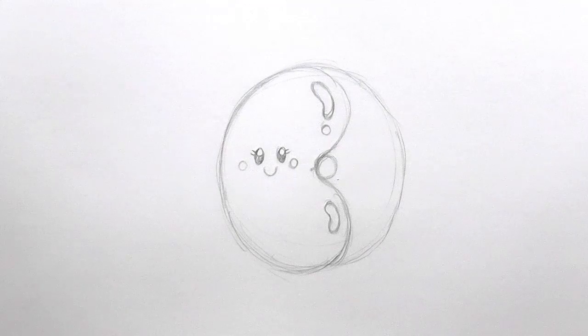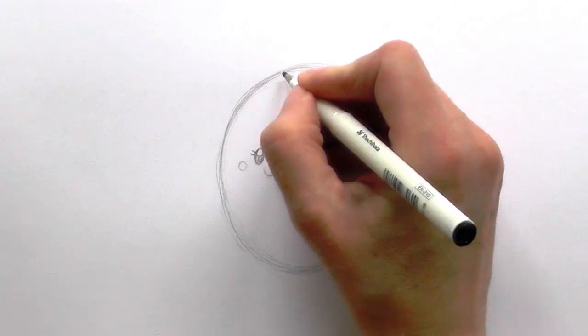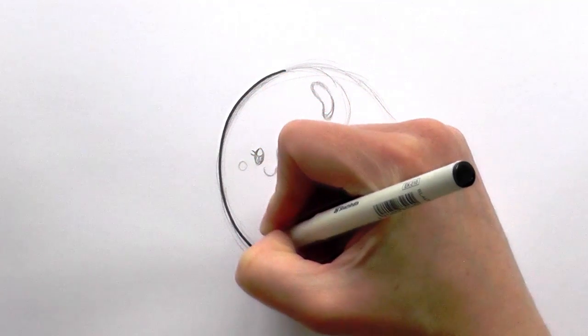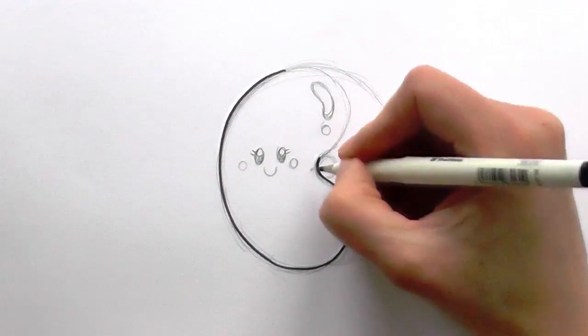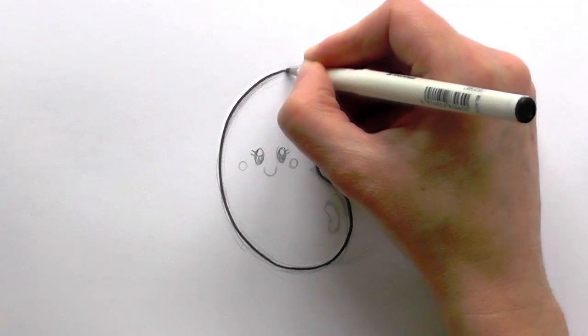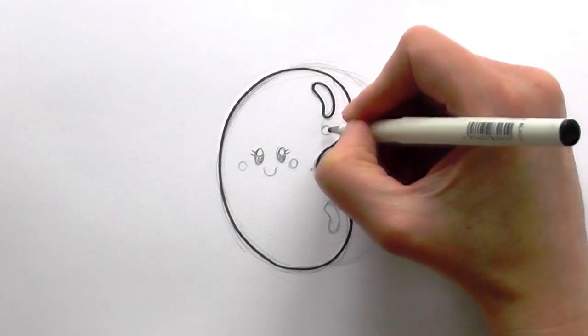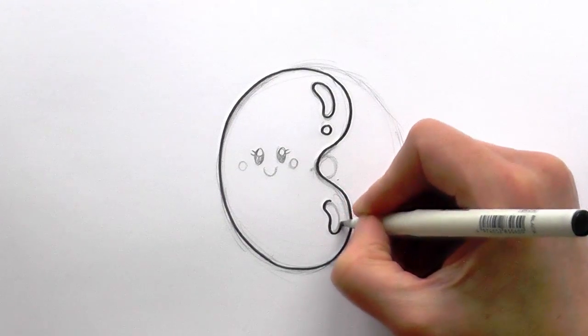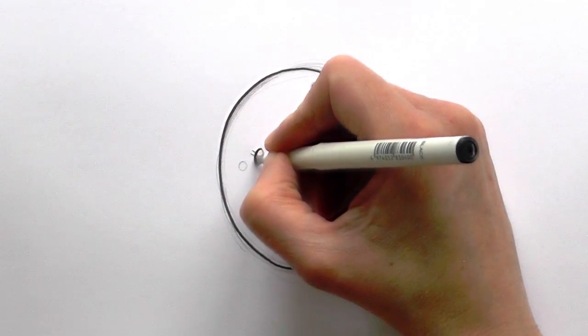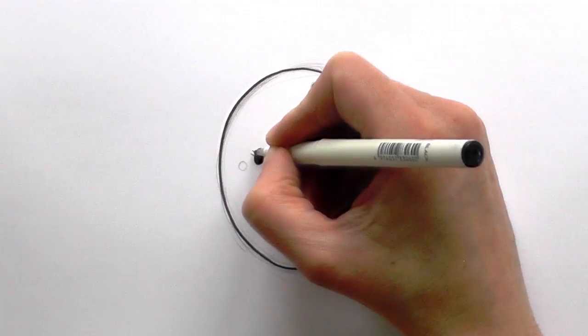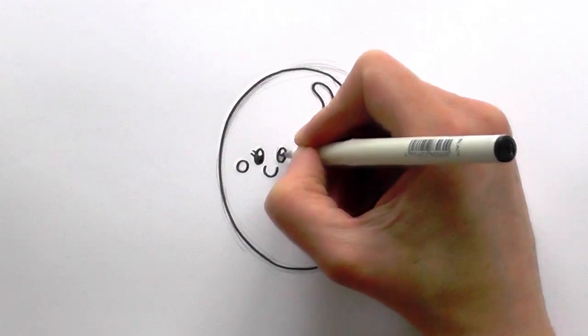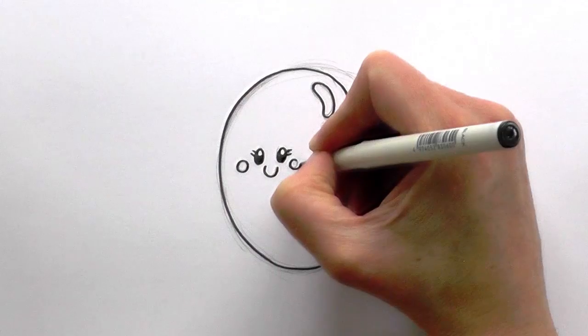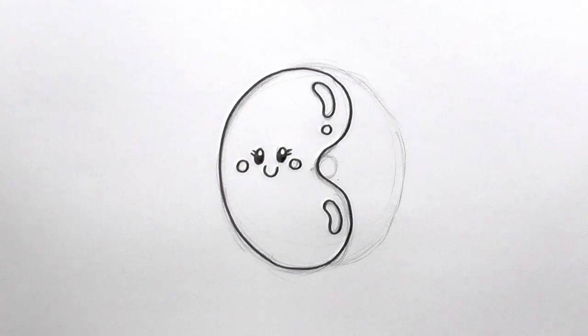Then we just grab our black pens and go back in and ink in the pencil lines. And that's how it goes. Let me just go back in and double up the thickness of the main part of the illustration to make it look even more cartoony.